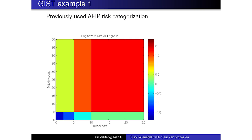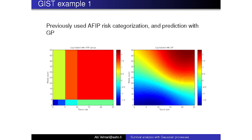Here's the previously used AFIP risk categorization — the rule-based approach. You can see these blocks where someone decided where the cut points for tumor size and mitotic count are, resulting in a certain number of groups. For comparison, using Gaussian processes we have a non-linear function for how tumor size and mitotic count affect the hazard. You can see from the shape that there are non-linear effects and interactions between these covariates. The nice thing is that we get these interactions easily too.